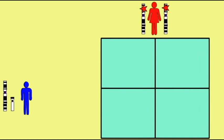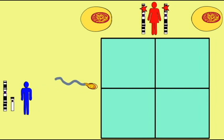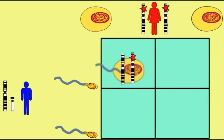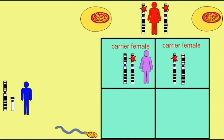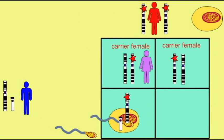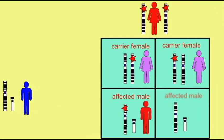If a normal male and an affected female have offspring, all of the children will receive a recessive mutation from their mother. For the females, this will be the only copy of the recessive mutation that they receive, so they will not have the recessive phenotype — they will simply be carriers of this recessive trait. All of the males, however, will receive their only X chromosome from their mother, and this chromosome carries the recessive mutation, so all of the males would be affected by this recessive disorder.